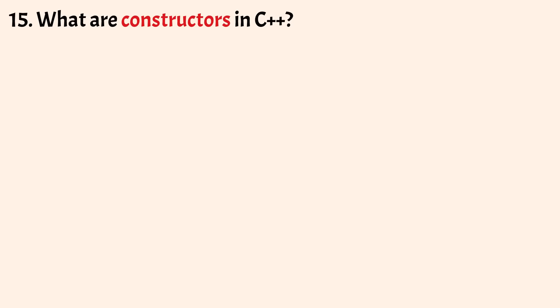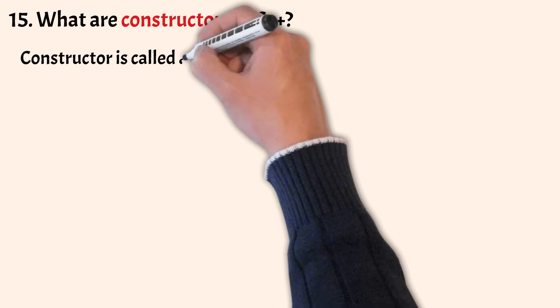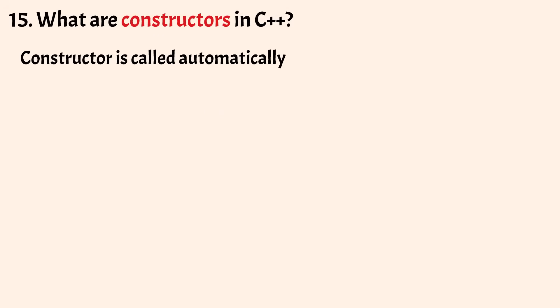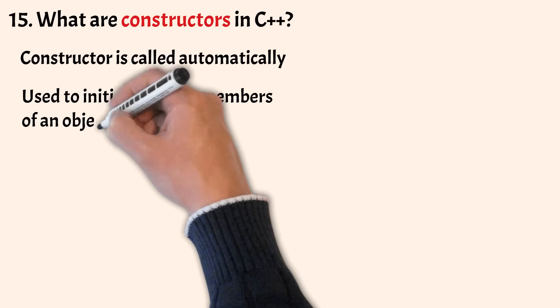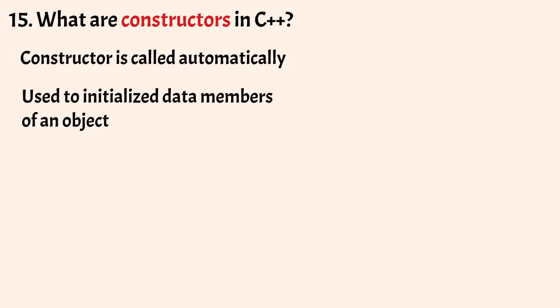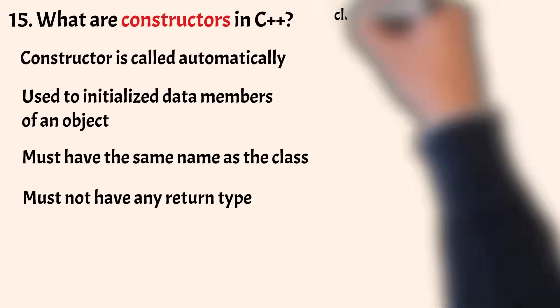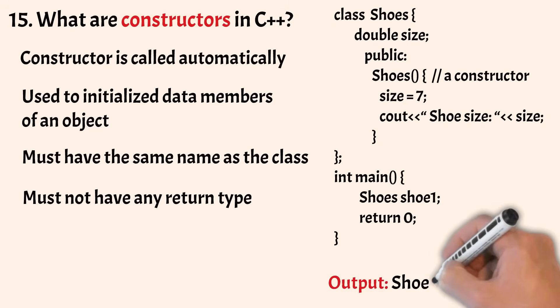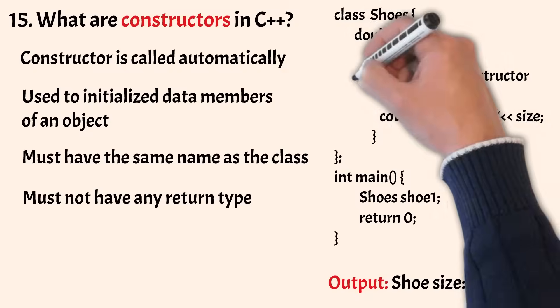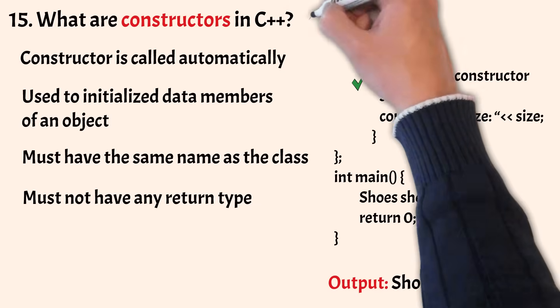So let's understand what are constructors in C++. A constructor is a specialized member function that is called automatically whenever an object is created. A constructor is primarily used to initialize data members of an object. Now let us understand the rules for defining a constructor. First, a constructor must have the same name as the class of which they are members — this is how the compiler knows that it is a constructor. Second, a constructor must not have any return type.